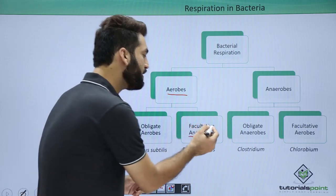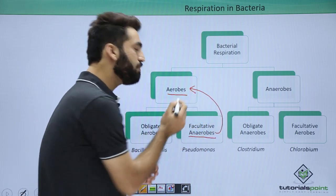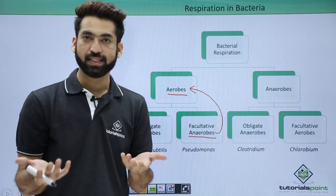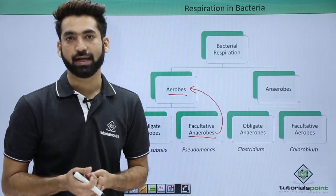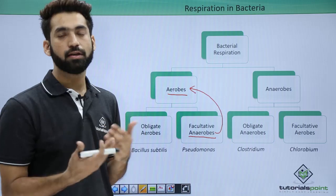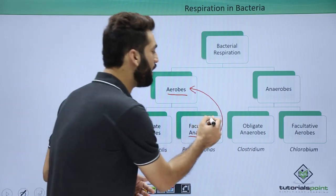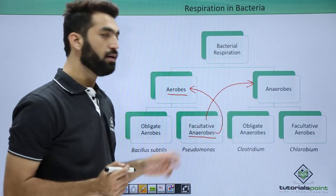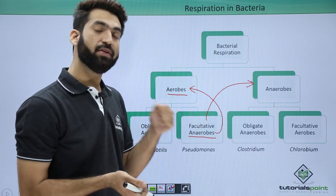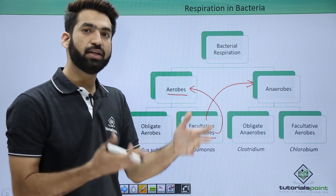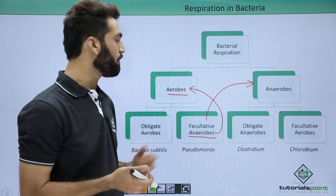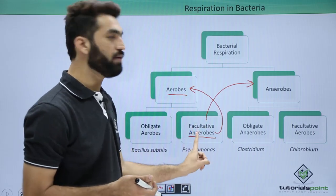Facultative anaerobes are actually aerobic bacteria, so they require oxygen for respiration. But if oxygen is not present at any time, the bacteria will not die. Instead, they will start using the facilities of the anaerobic environment. Being aerobic, when they have oxygen they respire aerobically, but when they don't get oxygen, they won't die — they will start using the facility of anaerobic respiration. That is why they are called facultative anaerobes.